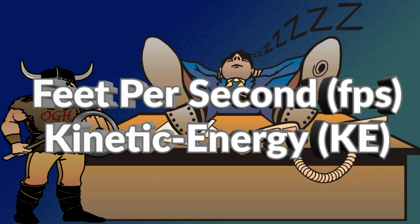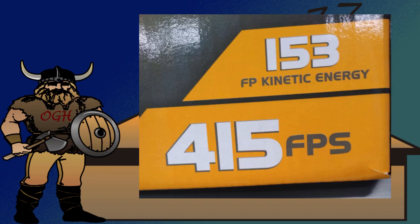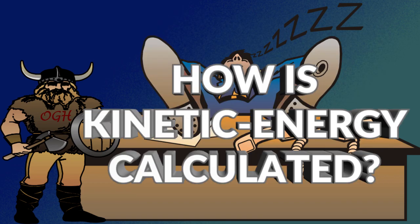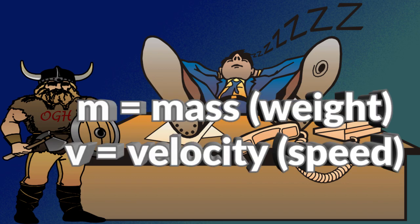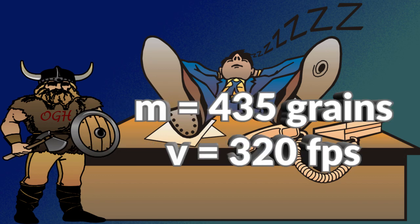Manufacturers like to advertise feet per second and kinetic energy, like seen here. Frequently it is the largest print on the box or in the ad. How is kinetic energy calculated? The formula for kinetic energy is one half mv squared, where m equals mass and v equals velocity.